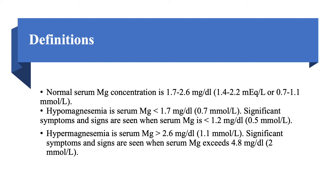Hypermagnesemia is serum magnesium above 2.6 milligrams per deciliter, and significant symptoms and signs occur when serum magnesium exceeds 4.8 milligrams per deciliter — so it has to be pretty high.